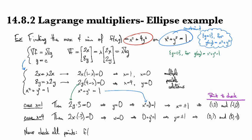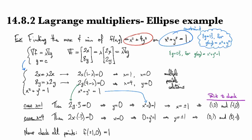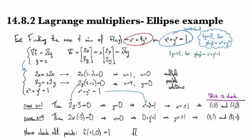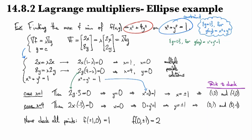So once you've found all the possibilities, then you just evaluate the function there. Now notice that f takes the same value at positive and negative 1, 0, because x appears with a square in the objective function. And so when we substitute this in, we get 1. And then when we look at 0 plus or minus 1, we end up with 2. And so we've discovered that these are the minimum values and these are the maximum values for this particular function.